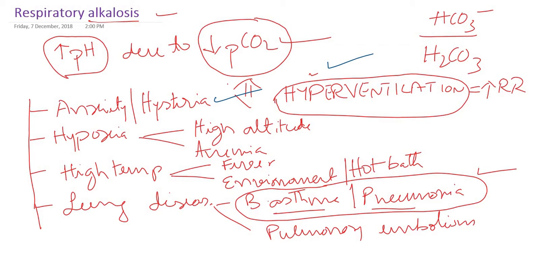So these are the conditions where we can see hyperventilation leading to respiratory alkalosis: hysteria or psychogenic anxiety; hypoxia due to high altitude or anemia; high temperature whether environmental, hot bath, or fever; and some pulmonary diseases where there is alveolar hyperventilation.